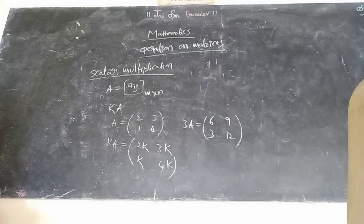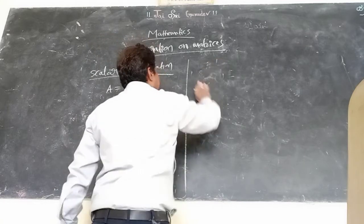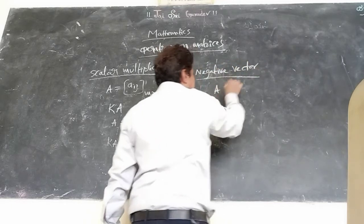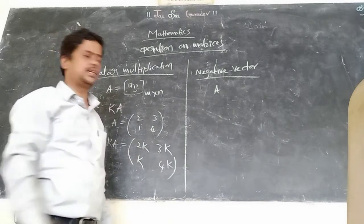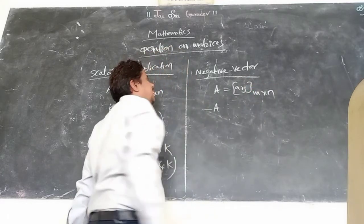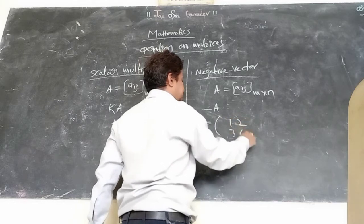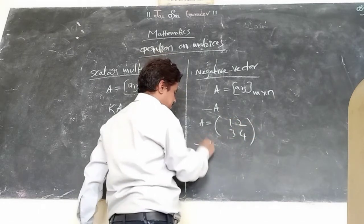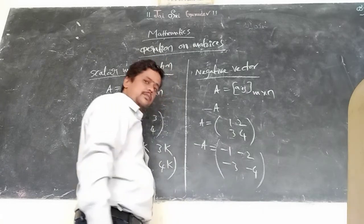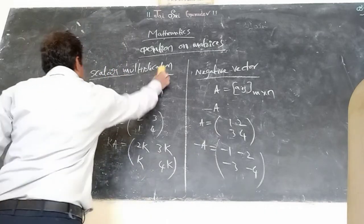What is a negative vector? If A is a matrix, then minus A is the negative of that matrix. For example, if A = [1, 2; 3, 4], then minus A = [-1, -2; -3, -4]. Each element is multiplied by minus one. This is the concept of the negative of a matrix.